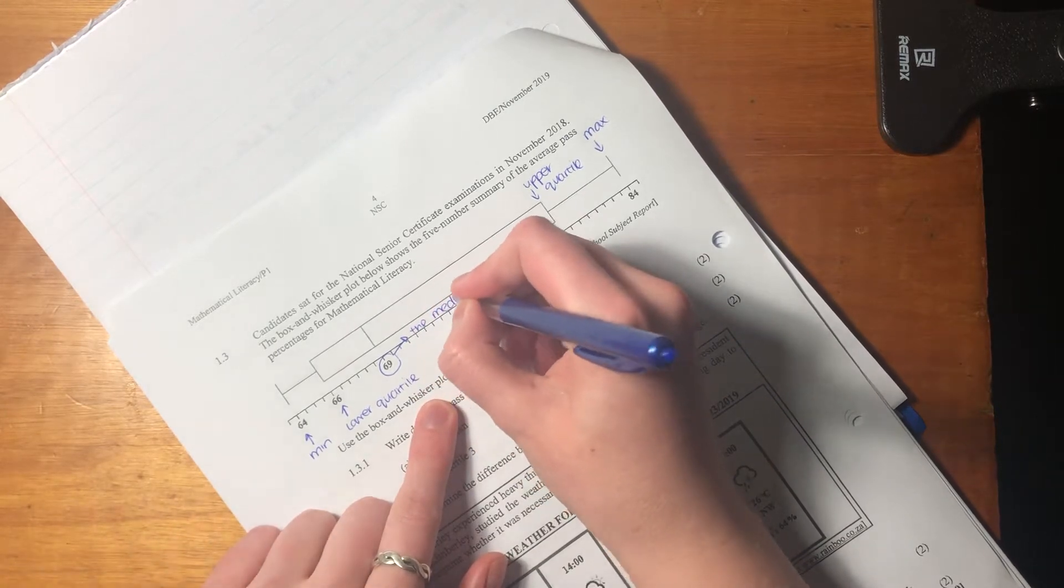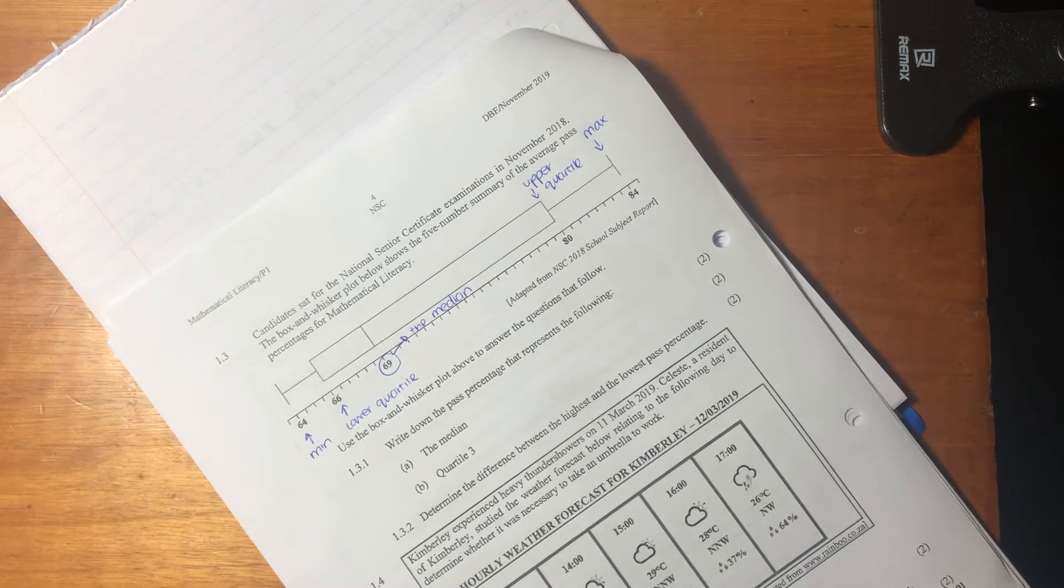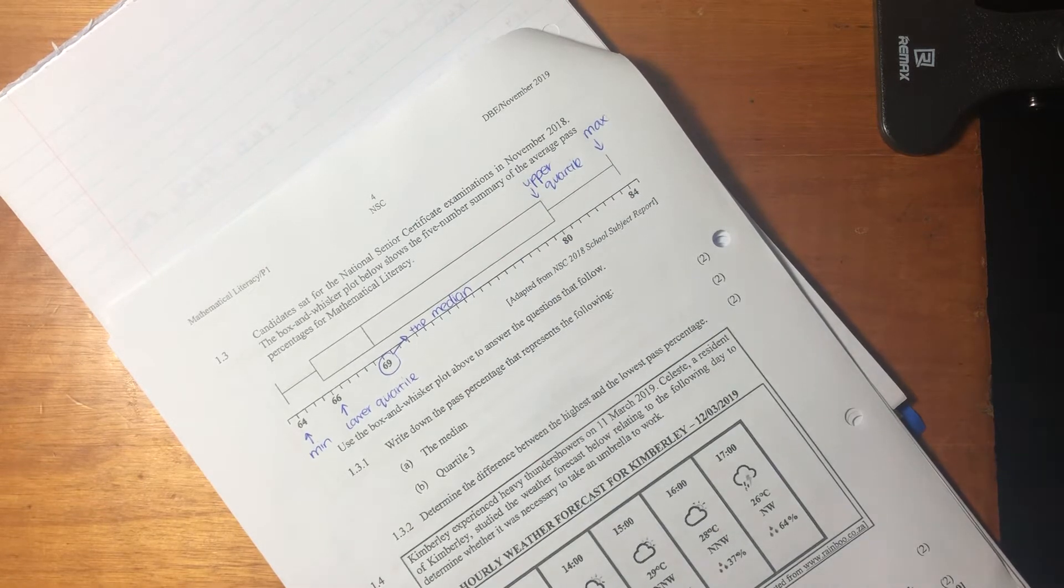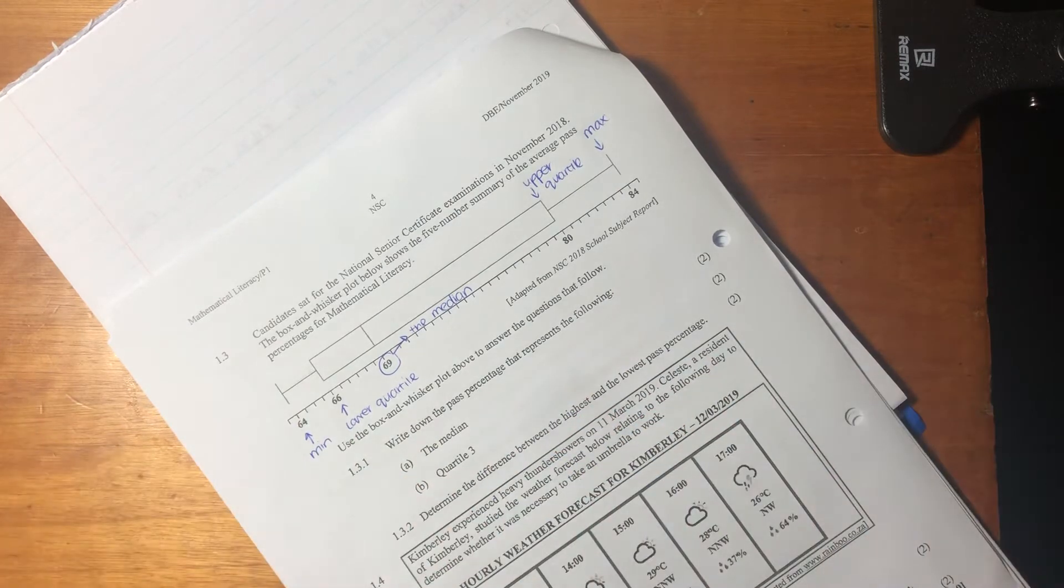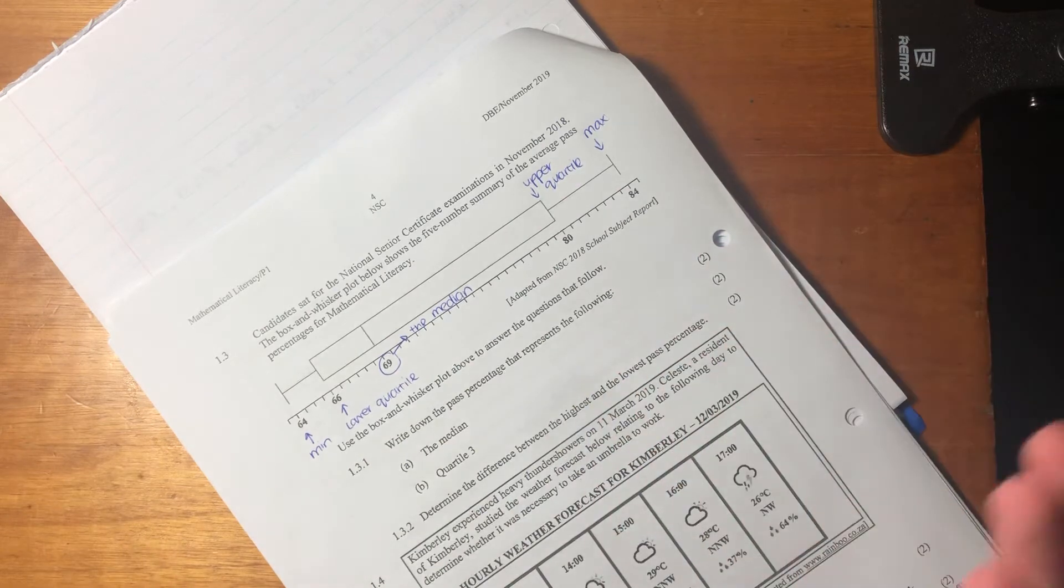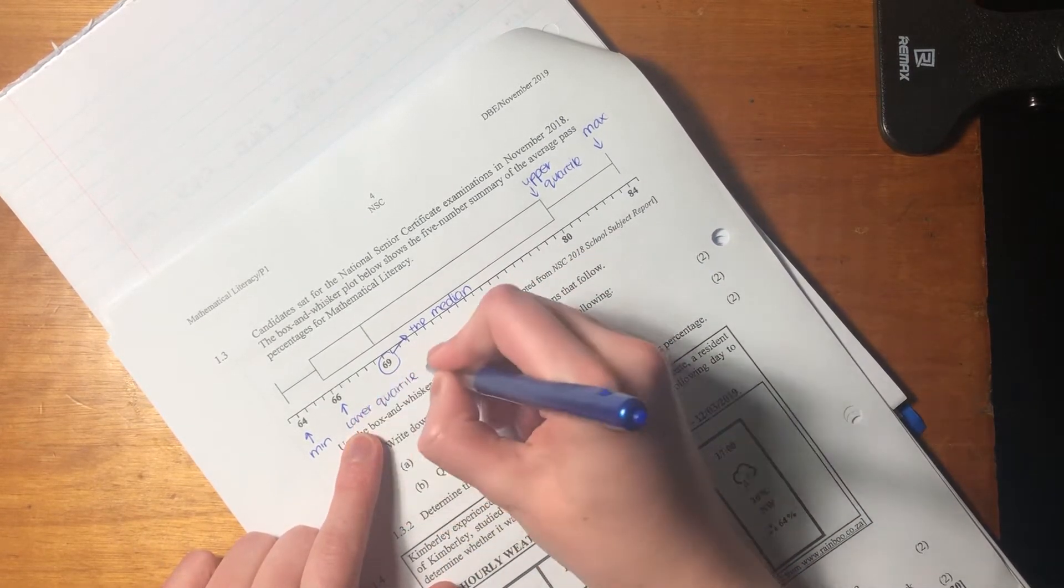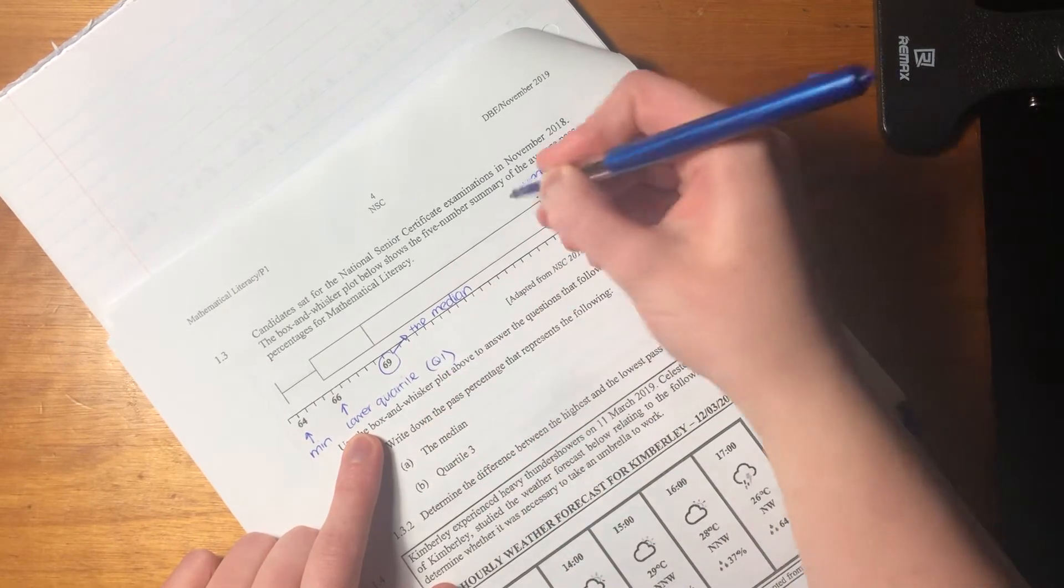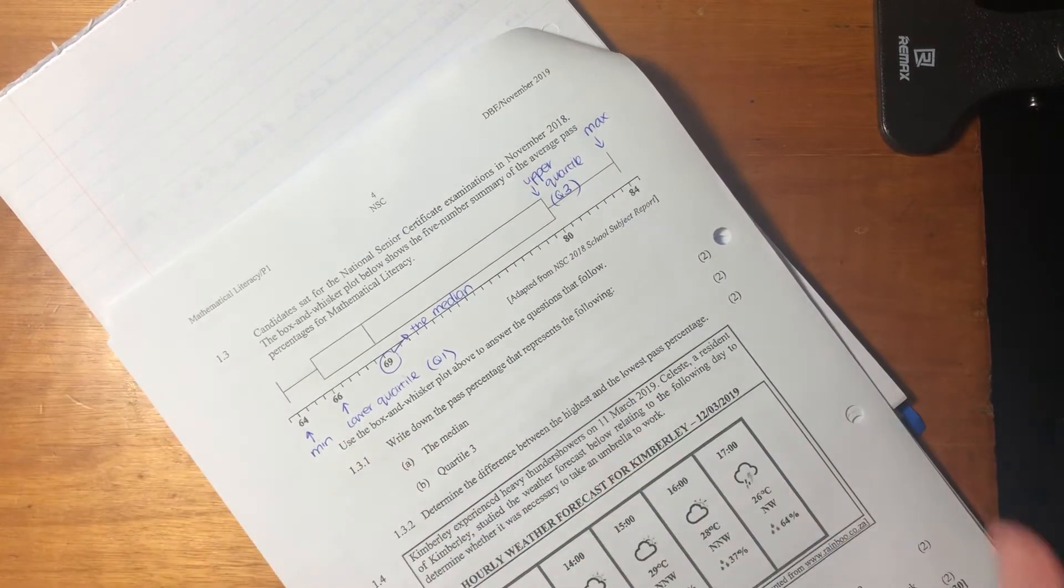And this 69 over here is what we call the median. And the median, what's important about the median is that the median means at the middle, right? Mid, median. So that is basically what each of those points mean. So now we've really probably answered some of the questions because just by labeling this, you really know where things are. Just to highlight here that lower quartile can sometimes be called quartile one and upper quartile can sometimes be called quartile three.